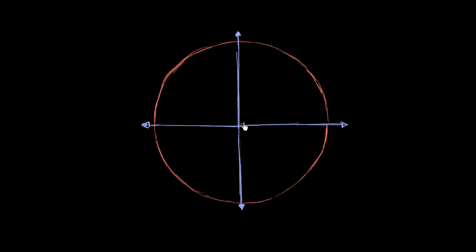Let's say that I've got some angle theta right over here. I'm drawing it on our unit circle with a typical convention that we start with a ray along the positive x-axis. The terminal side of this angle where it intersects the unit circle determines essentially the sine and cosine of that theta. So the cosine of theta is the x-coordinate of where this terminal ray intersects the unit circle.